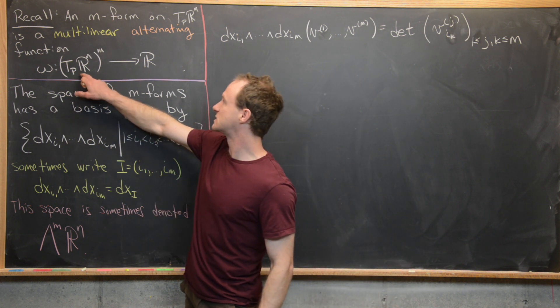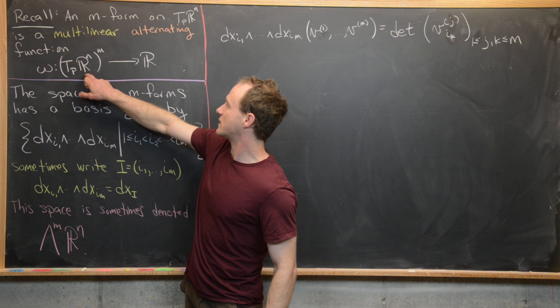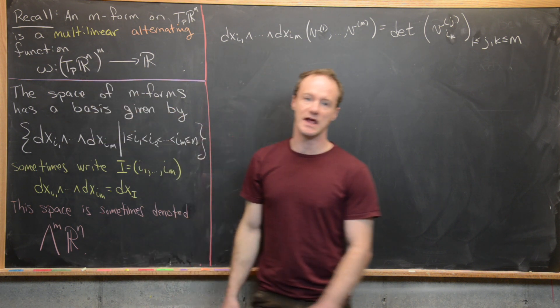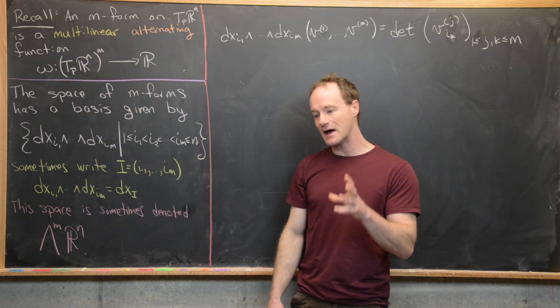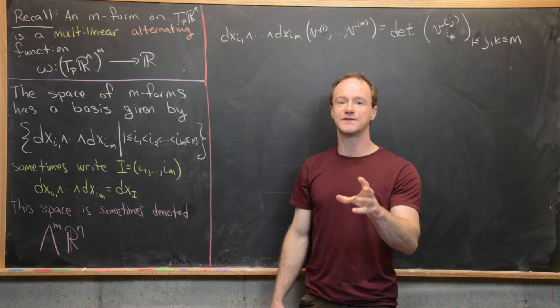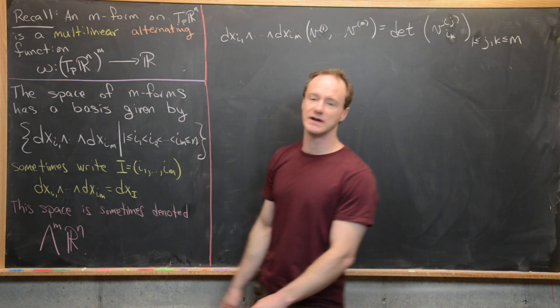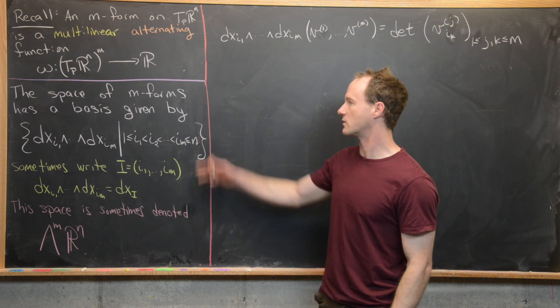Its inputs are M different vectors from TPR^N. So in other words, you're sticking M vectors into this, and each vector is of size N, and the output is just the real numbers.